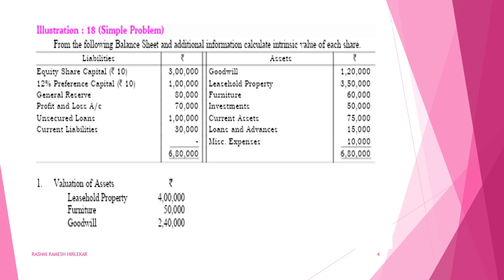In the balance sheet there are two main parts: the first column is liabilities and the third column is assets. Under liabilities: equity share capital of Rs.10 each — Rs.3 lakh; 12% preference share capital of Rs.10 each — Rs.1 lakh. That means 10,000 preference shareholders and 30,000 equity shareholders. General reserve Rs.80,000; profit and loss account Rs.70,000; unsecured loan Rs.1 lakh; current liabilities Rs.30,000.